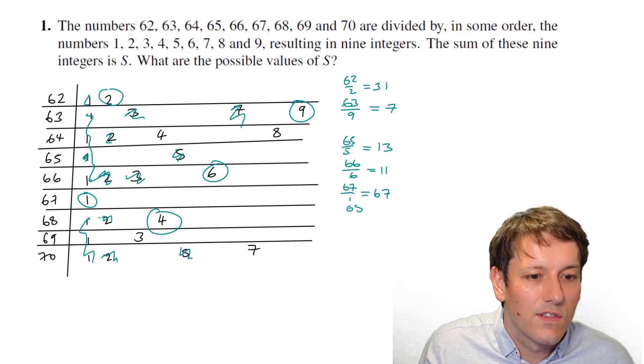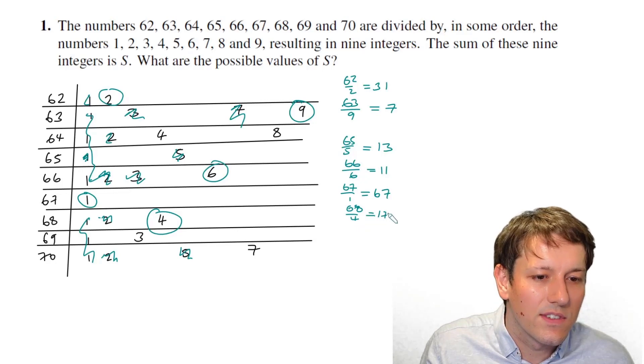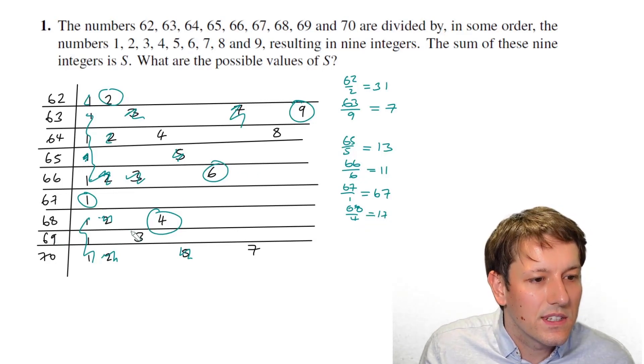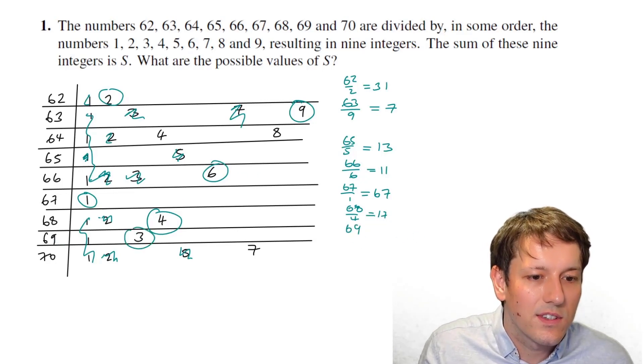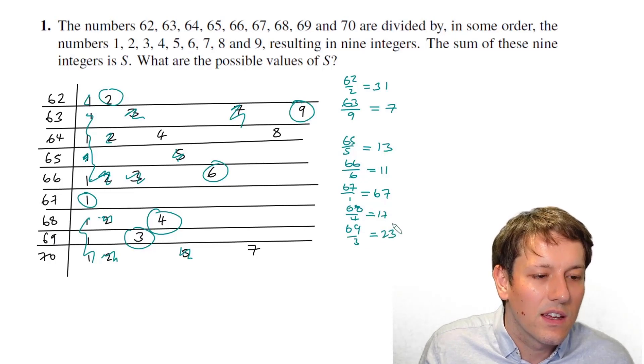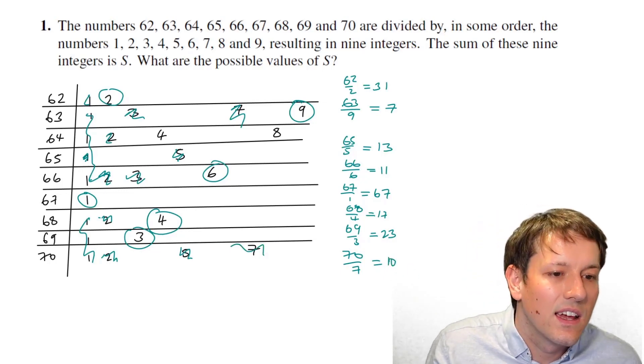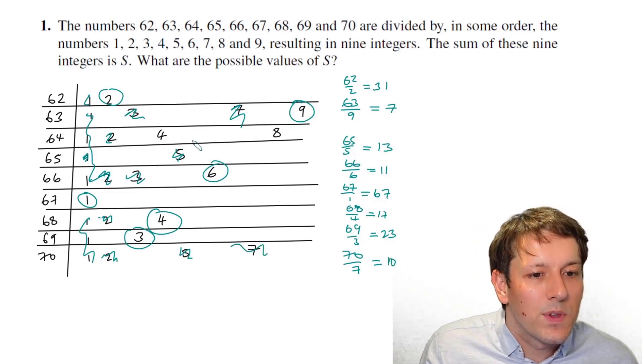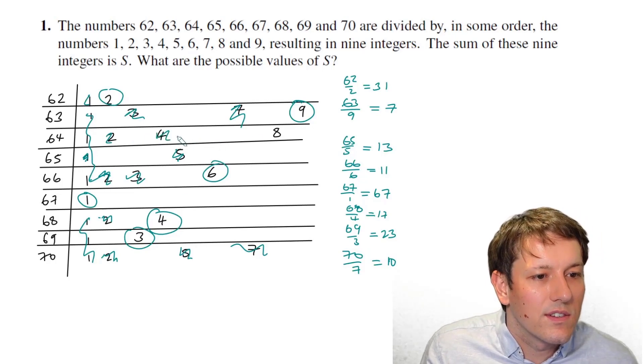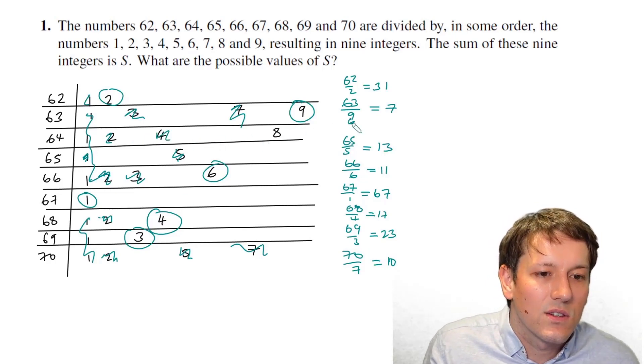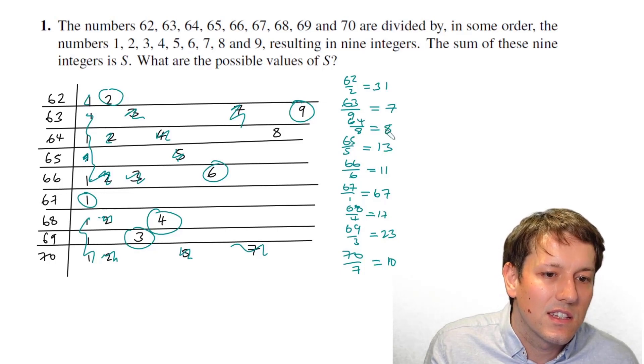68 has only got the 4 left, so we're going to do 68 divided by 4, that gives us 17. 69 has only got the 3 left, so 69 over 3 is 23. 70 has only got the 7 left, so 70 divided by 7 is 10. And what are we left with? With 64, just the 8, so 64 over 8 is equal to 8.